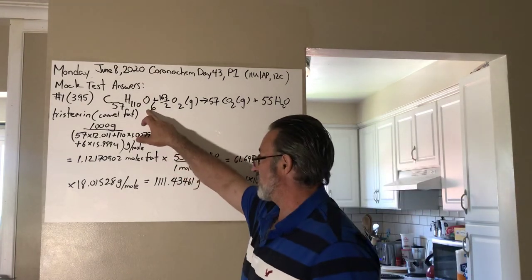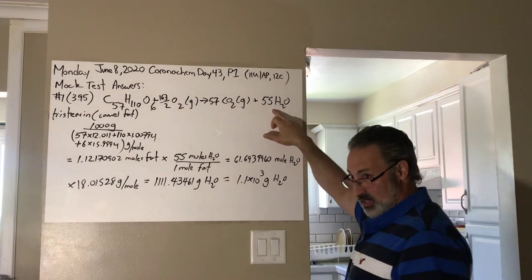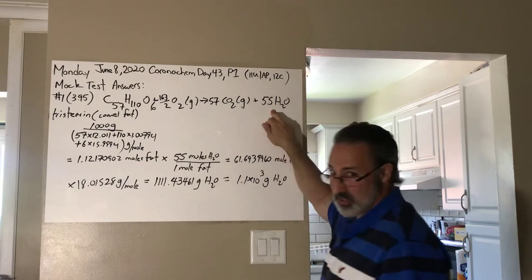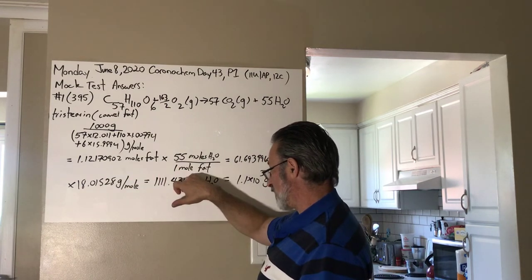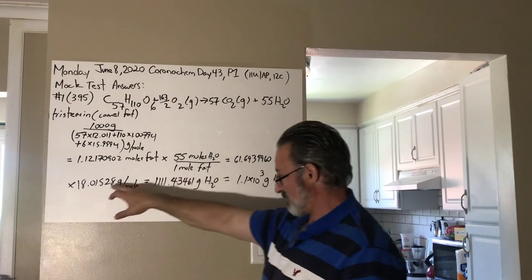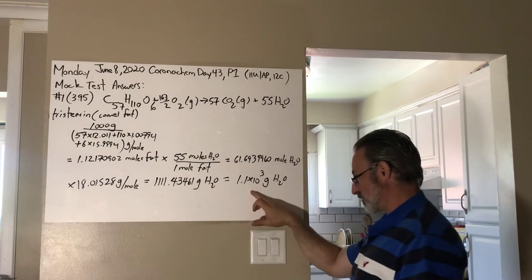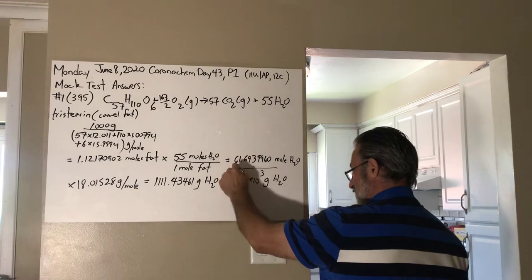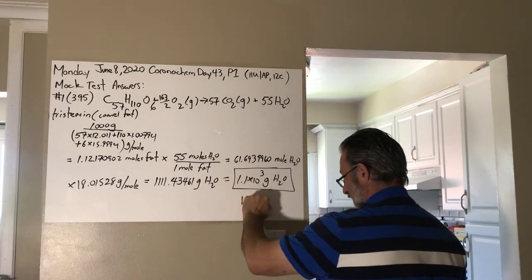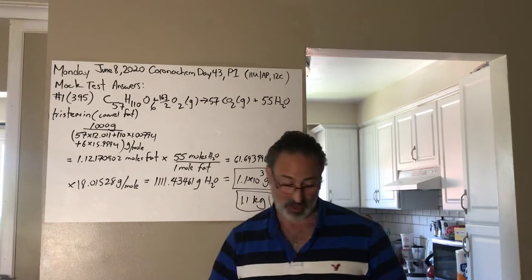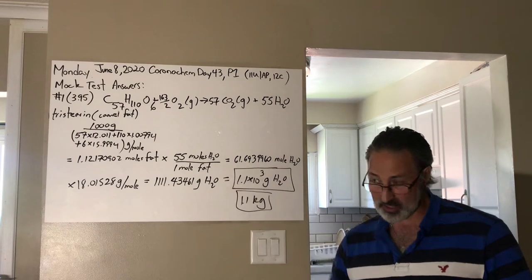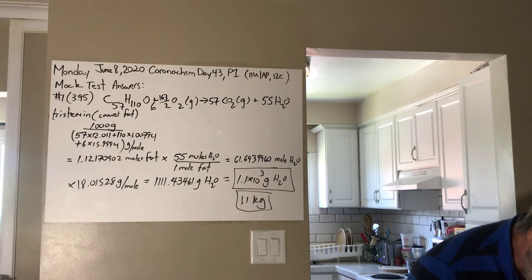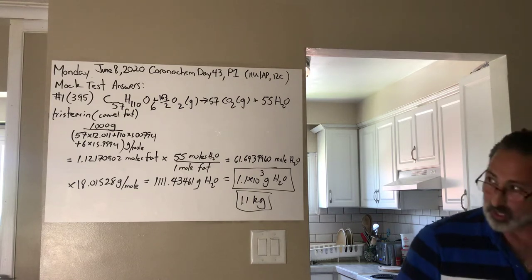But the proportion we're interested in is the 1 to 55 ratio of tristearin to molecules of water produced. So for every one mole of tristearin that's metabolized, 55 moles of water are produced, and this is where the camel stores its water. It literally does store it in its hump because the hump is mostly fat. So, 1.12 moles of fat times 55 moles of water produced for every one mole of fat, which is 61.69 moles of water. Multiply that by the molar mass of water. It gives you 1111 grams of water. The final answer is 1.1 times 10 to the 3 grams of water, or you could say 1.1 kilogram of water from basically a kilogram of the fat. It's an incredible amount of metabolic water that is produced.